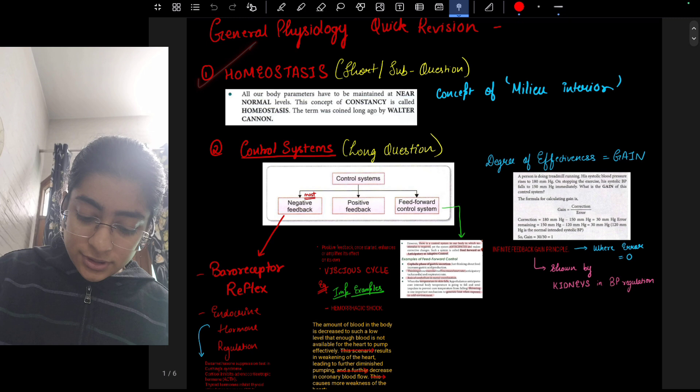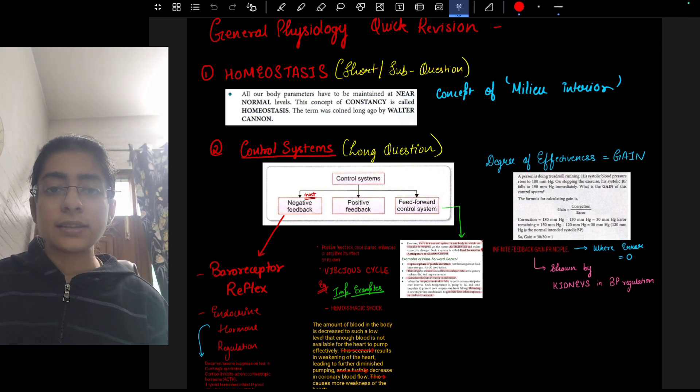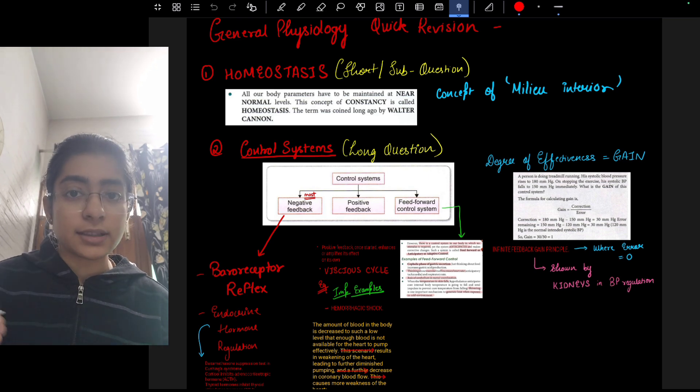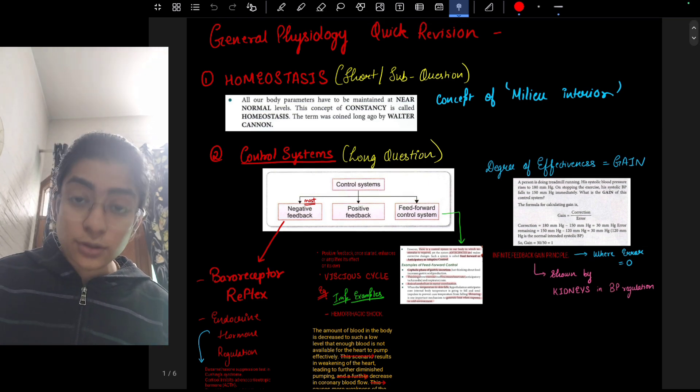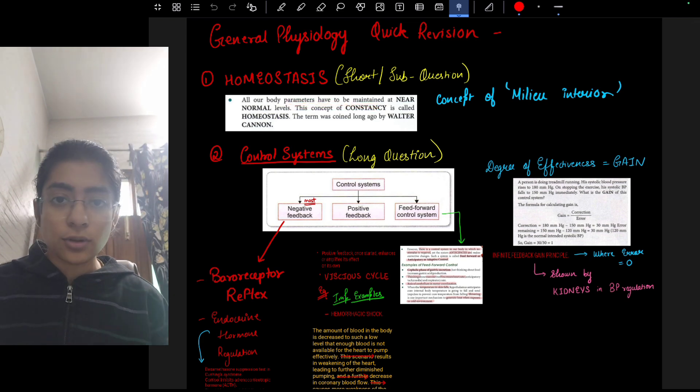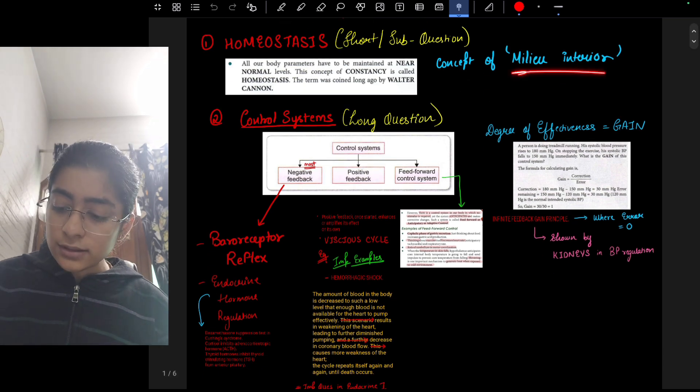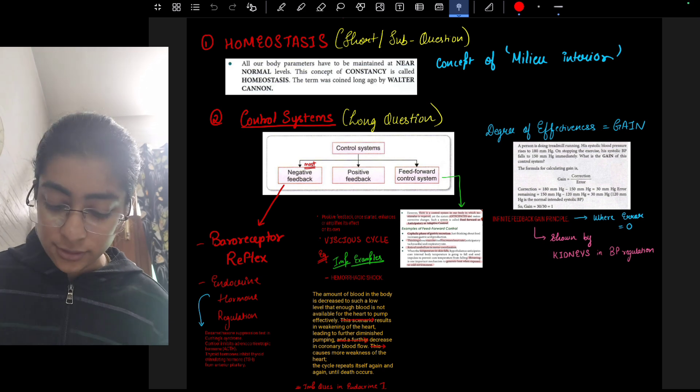First of all, what is homeostasis? This is a very important short or sub-question. They can put homeostasis along with the regulatory feedback cycles in the exam. So homeostasis: all our body parameters have to maintain a near constant normal level. This constancy is called homeostasis and we can also explain it with the concept of milieu interior. It is given in some of the standard books you can refer to.